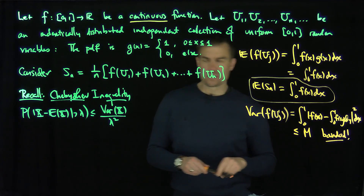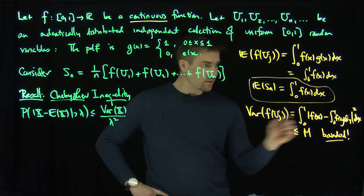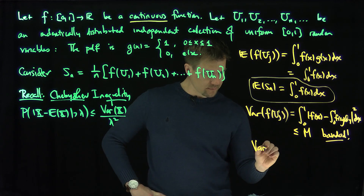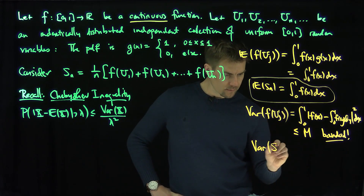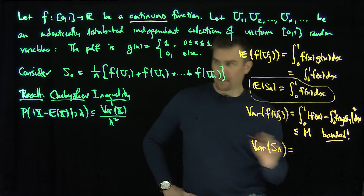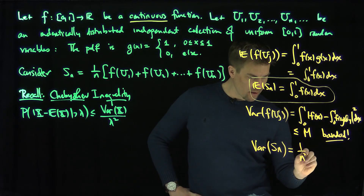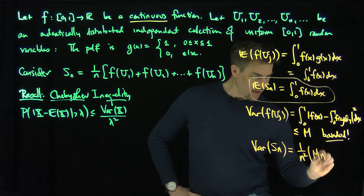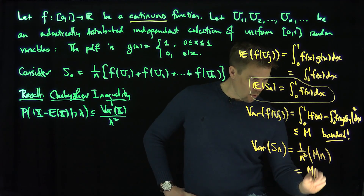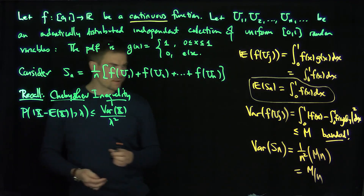So now, that tells me that the variance of Sn — since these are independent and bounded — I can pull out a 1 over n squared, giving 1 over n squared times m times n. So the variance of Sn is going to be m over n.